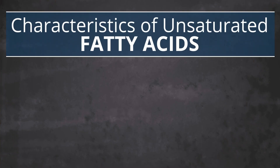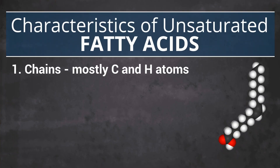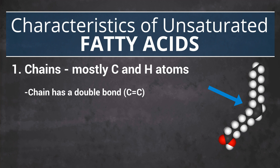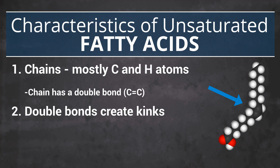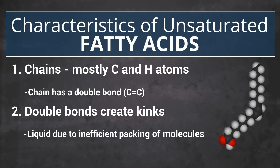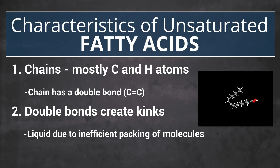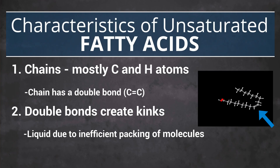Unsaturated fatty acids contain at least one double bond within the carbon chain. Double bonds introduce kinks or bends to the chain. The more double bonds a chain has, the more kinks it will have and the more unsaturated it becomes. Even though weak attractive forces exist between neighboring unsaturated lipid molecules, the irregular shape of the molecules prevents them from packing together in an ordered arrangement that would allow the lipid to solidify, so unsaturated lipids tend to remain liquid at room temperatures.